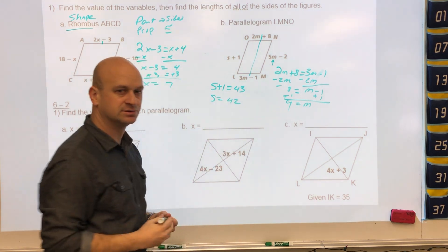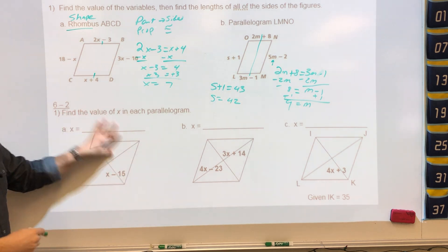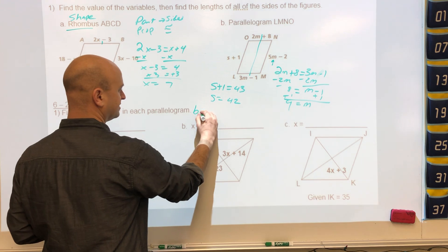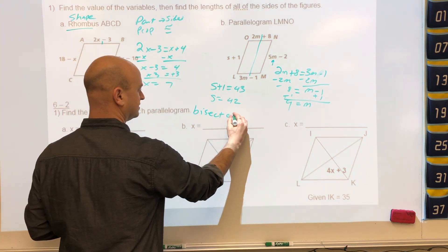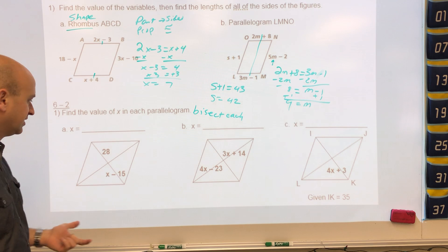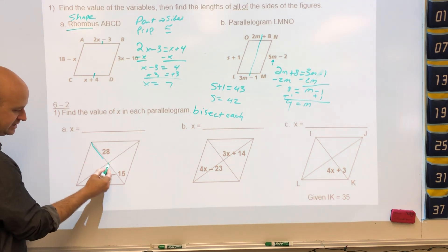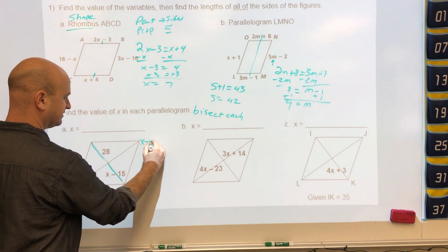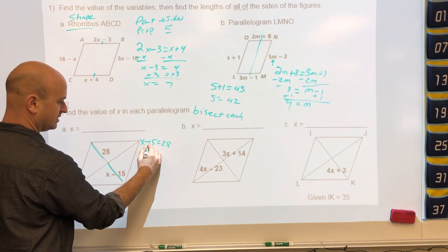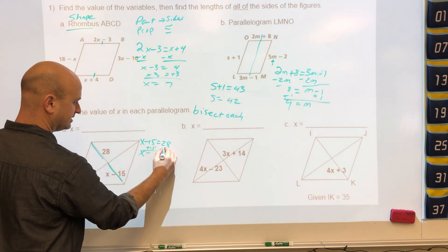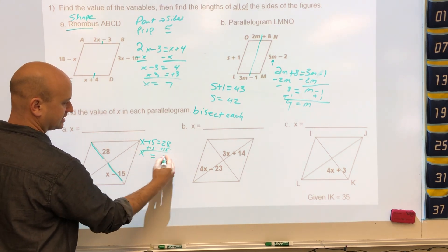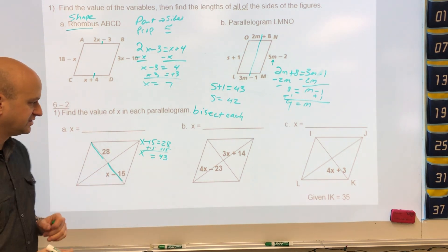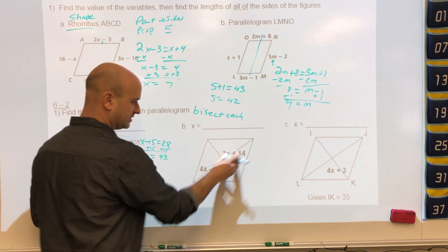s equals 42. Now we have a parallelogram where we're dealing with diagonals. Diagonals in a parallelogram bisect each other — they split each other into two equal parts. So this is 28 and x minus 15, and they're the same length. x minus 15 equals 28, add 15 to both sides, so x equals 43.